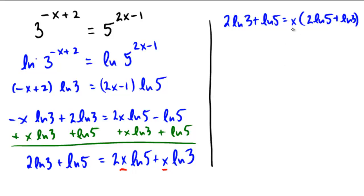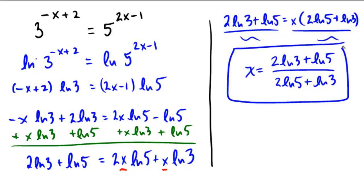And so as I divide by that stuff that I don't want, I can see that my final answer is coming out to be x equals 2 ln 3 plus ln 5 over 2 ln 5 plus ln of 3. And that's my final answer.